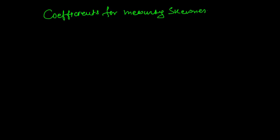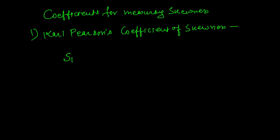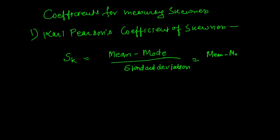Now we will discuss coefficients for measuring skewness. The first one is Karl Pearson's coefficient of skewness. It is defined as SK equals mean minus mode, divided by the standard deviation, or SK equals mean minus mode divided by sigma, where sigma is the standard deviation.